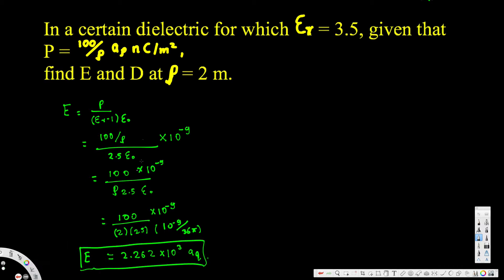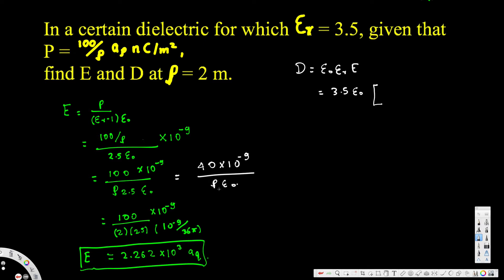Now we are going to calculate the D value. To calculate D we use the formula D equals epsilon_naught times epsilon_r times E, where epsilon_r is 3.5. We can rewrite E as 40 times 10 to the power of minus 9 divided by rho epsilon_naught — since 2.5 times 40 equals 100 — and plug this into the D equation so that epsilon_naught cancels.